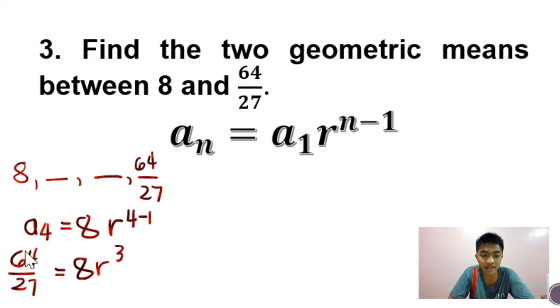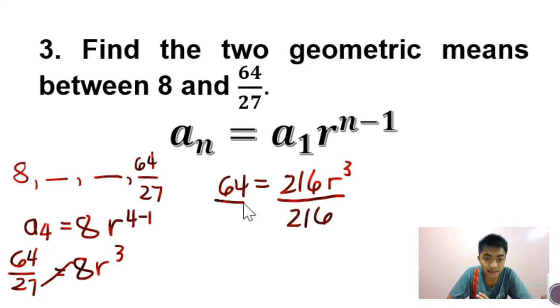Now the next thing we're going to do is that since may fraction dito, we're going to do cross multiplication. So we are going to multiply 27 to this one here. So 27 times 8 is actually 216. So we're going to copy this one. Minultiply natin si 27 sa 8. So naging 216 siya. At may natitirang r cube. We are solving for r here. So we're going to divide both sides by 216. Para macancel yun, yung matitira na lang sa isang side ng equation ay yung r cube. So 64 divided by 216 sa calculator nyo. The answer is 8 over 27.